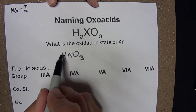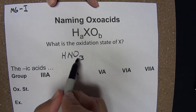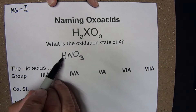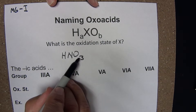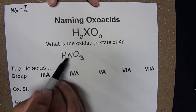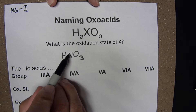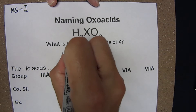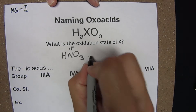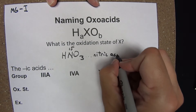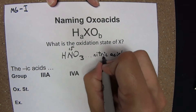Oxygen in the oxoacids will always have an oxidation state of minus 2. The sum of all the oxidation numbers within this compound must be 0, since it's a neutral compound. I had plus 1 and minus 2 times 3 for a total of minus 6 — wait, plus 1 minus 6 — that told me the nitrogen had to be plus 5. So knowing nitrogen had a plus 5 oxidation state is what allowed me to know that this was nitric acid.